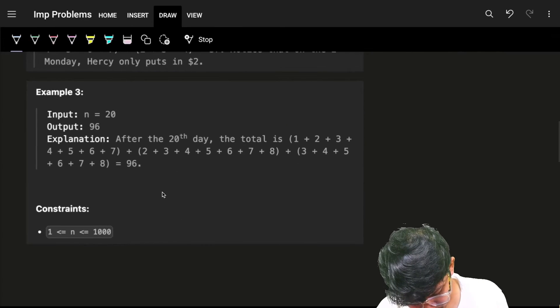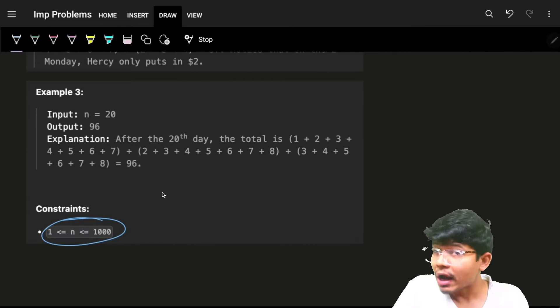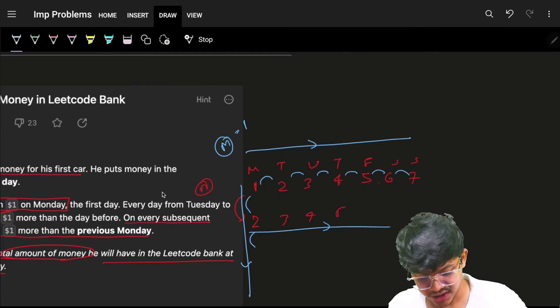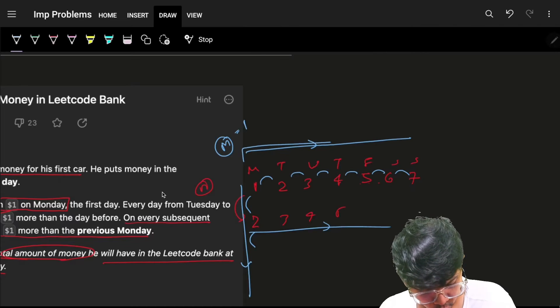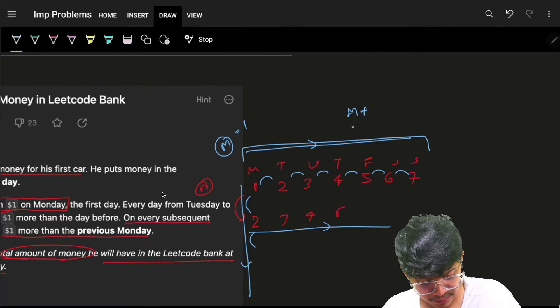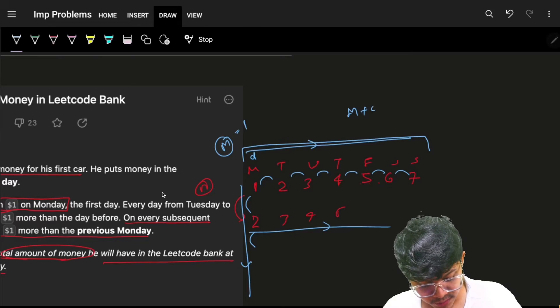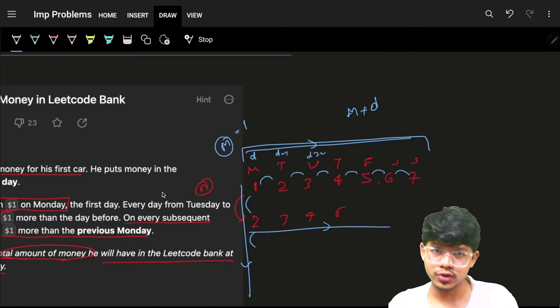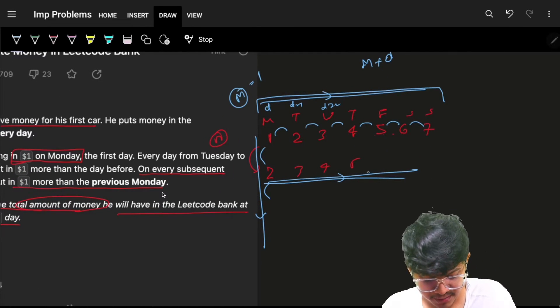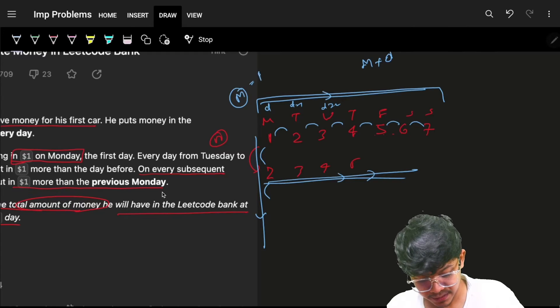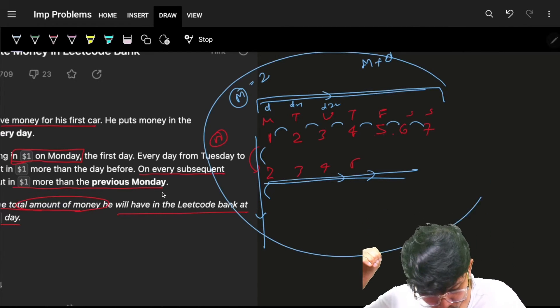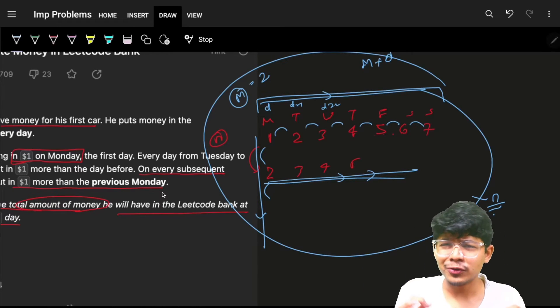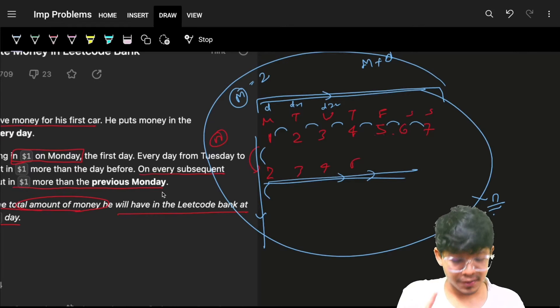Now, as the N is very small, one thing you would have done is simply maintain a Monday variable. Initially, the Monday is 1. You can go through all the weeks, keep on adding Monday plus the day, which is 0 here, then 1, then 2, and so on. As the week finishes, go to the next week and increase Monday by plus 1. You can go through all N elements and perform the same operation, just brute force and simply replicate the formula.